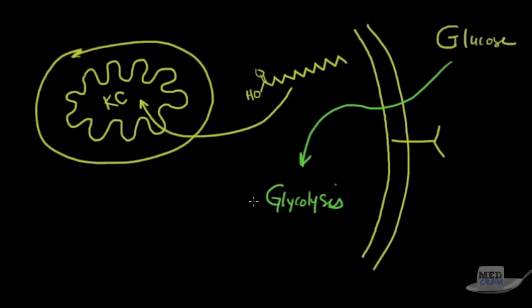And it will also go inside the cell in the form of pyruvate, which will eventually get broken down into the same product and enter Krebs cycle as acetyl-CoA. So we'll just do acetyl-CoA.